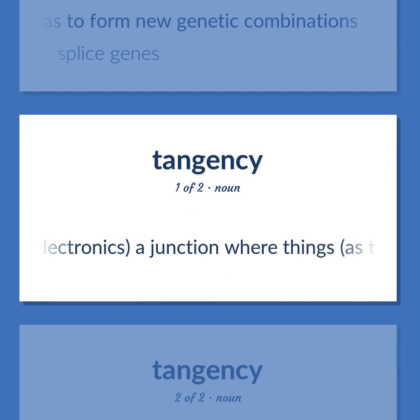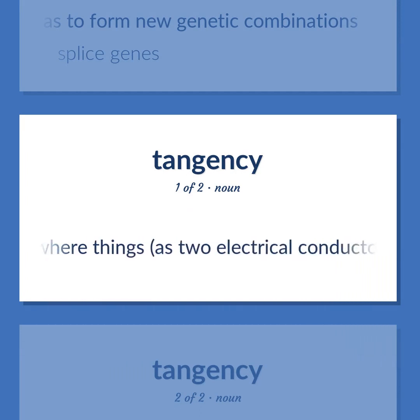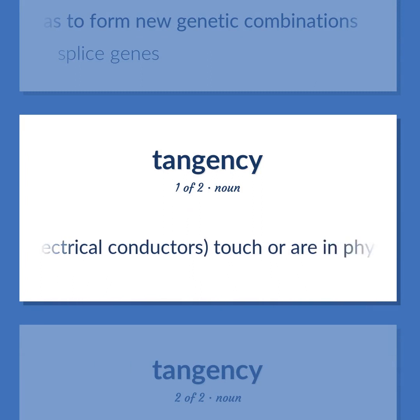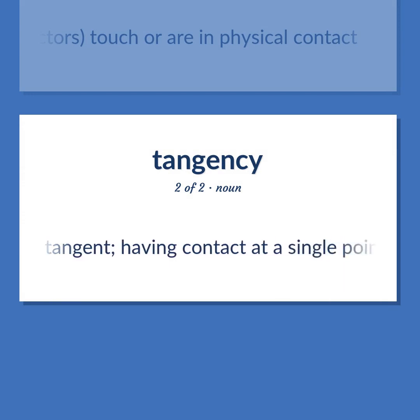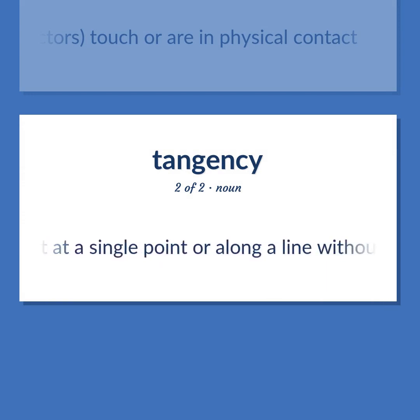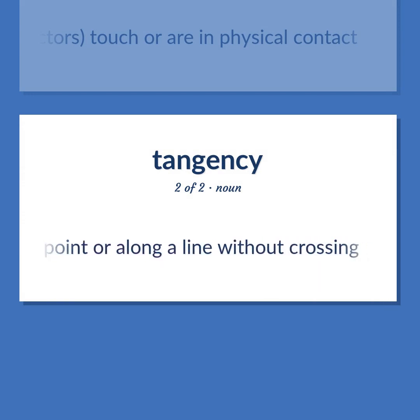Contact/Tangent: Electronics — a junction where things, as two electrical conductors, touch or are in physical contact. The state of being tangent; having contact at a single point or along a line without crossing.